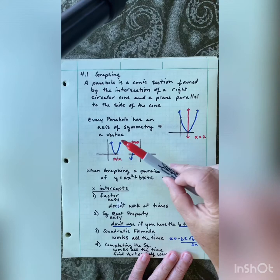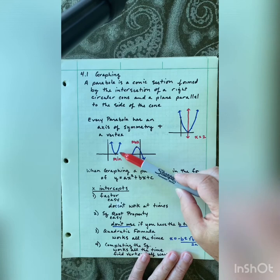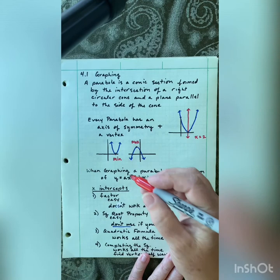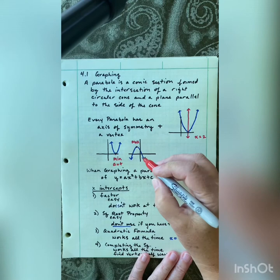Every parabola has a vertex. If it's opening up, it has a minimum because that is the lowest point. If it is opening down, it has a maximum because that's the highest point. Remember that if it is opening up, a is positive, and if it is opening down, a is negative.